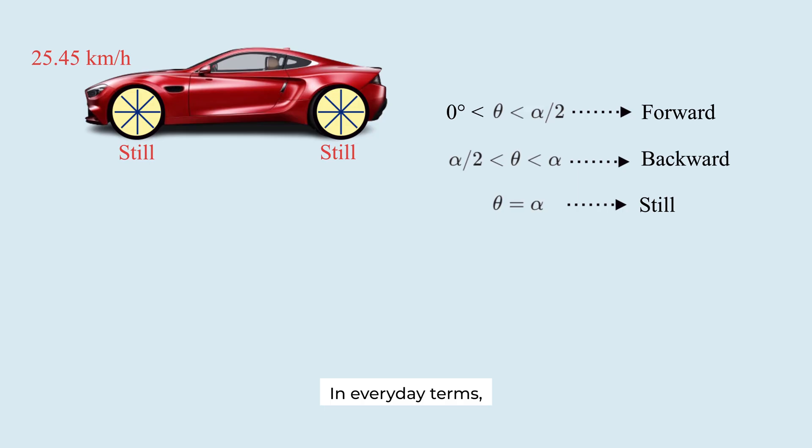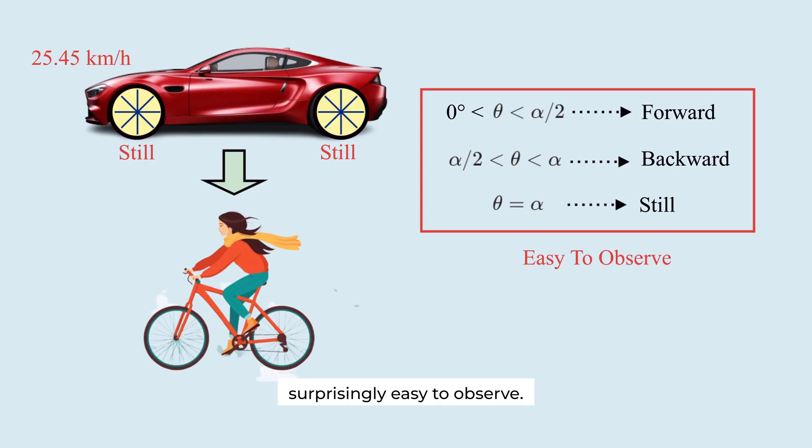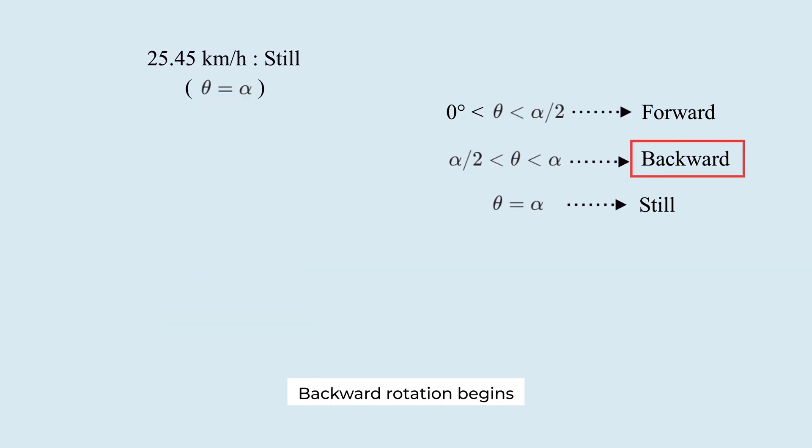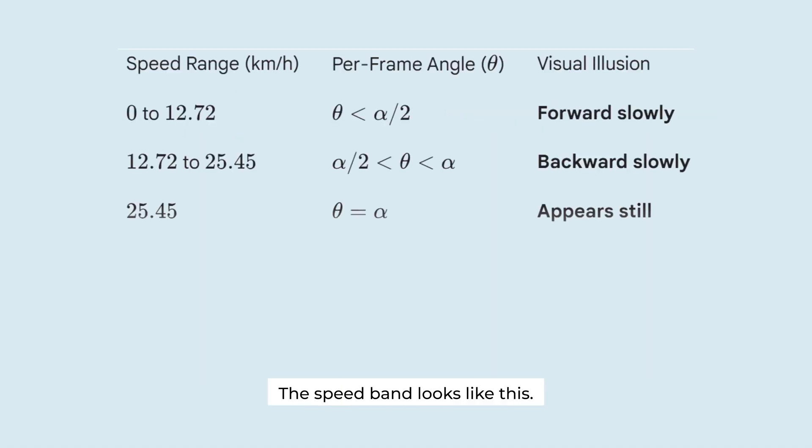In everyday terms, that's roughly the speed of a fast bicycle, which makes this illusion surprisingly easy to observe. Backward rotation begins at half that rotation speed. So, divide by 2. This is the speed at which the wheel seems to rotate backward. Based on this, the speed band looks like this.